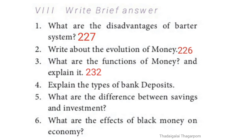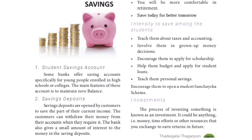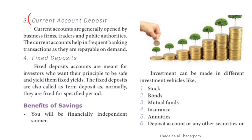Q4: Explain the types of bank deposits. Answer from page 233. Types include: Student savings account — some banks offer savings accounts. Current account deposit — current accounts are generally opened by business firms, withdrawable on demand.